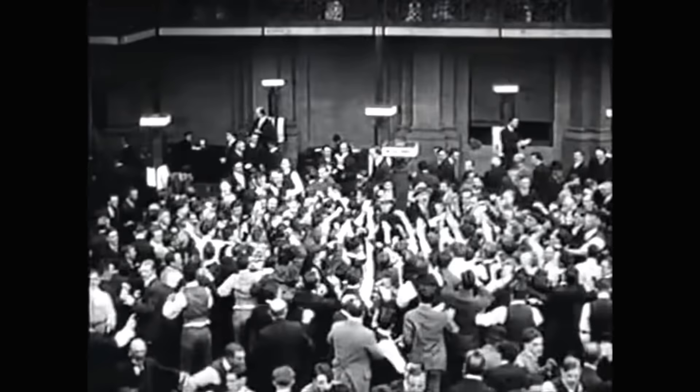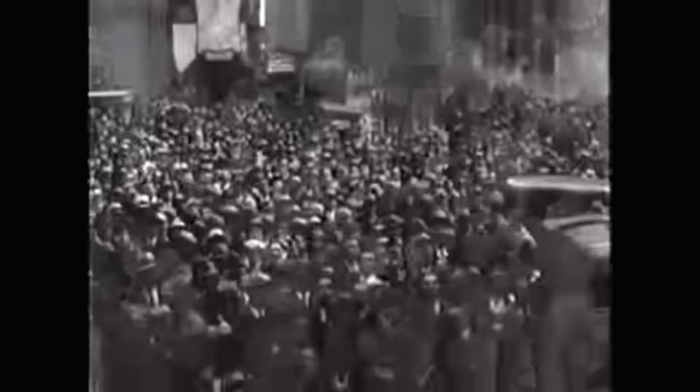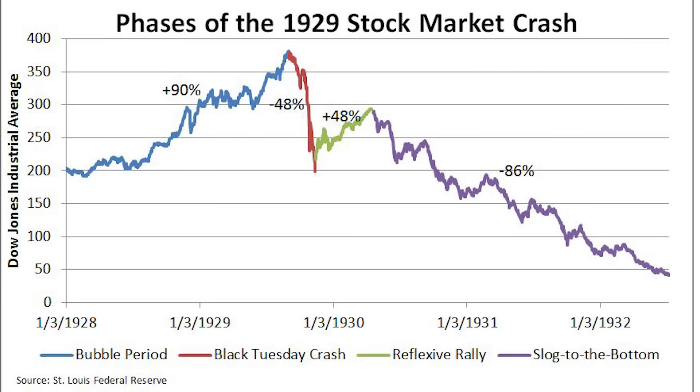Then, at the nadir of the crash, uncertainty gave way to sheer panic. Between October 28th and 29th, remembered infamously as Black Monday and Black Tuesday, the stock market completely collapsed, and $30 billion of wealth simply disappeared on those two days alone. The stock market would not return to its pre-crash heights until 1954.